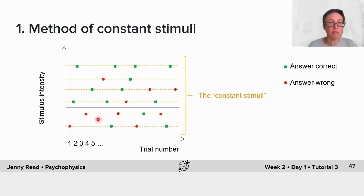I'm representing trials on which the subject got the answer correct with green squares, and trials where they got the answer wrong with these red disks. When the stimulus intensity is low, the subject's close to chance, and so there are approximately equal numbers of wrong and right answers. Whereas when the stimulus intensity is high, they're getting it correct almost all the time. Then you can work out where the threshold value is by doing that fit.